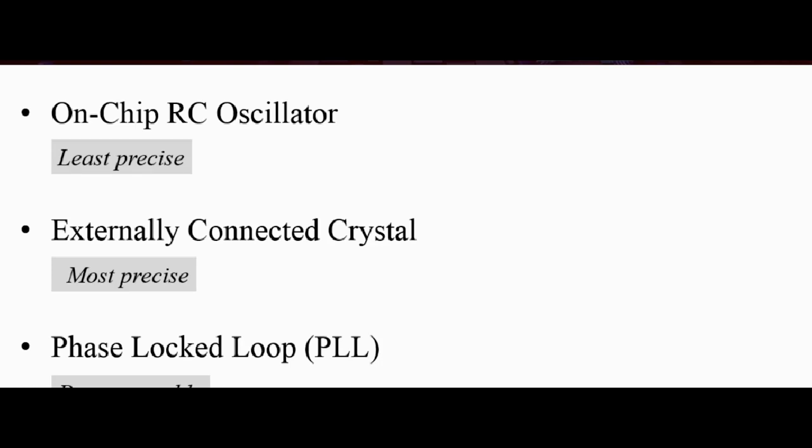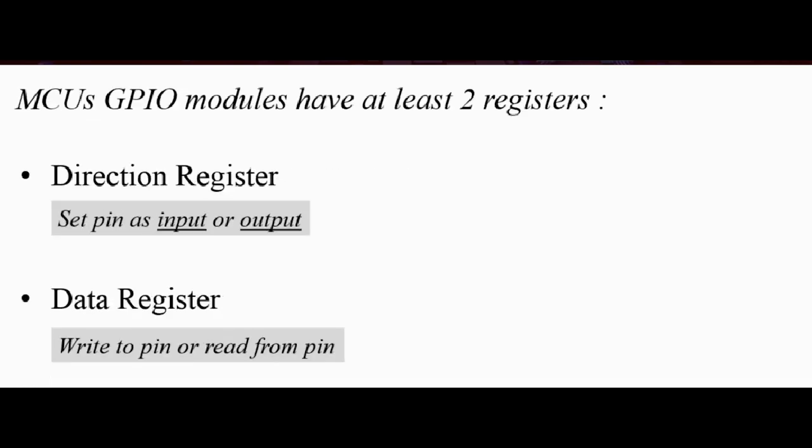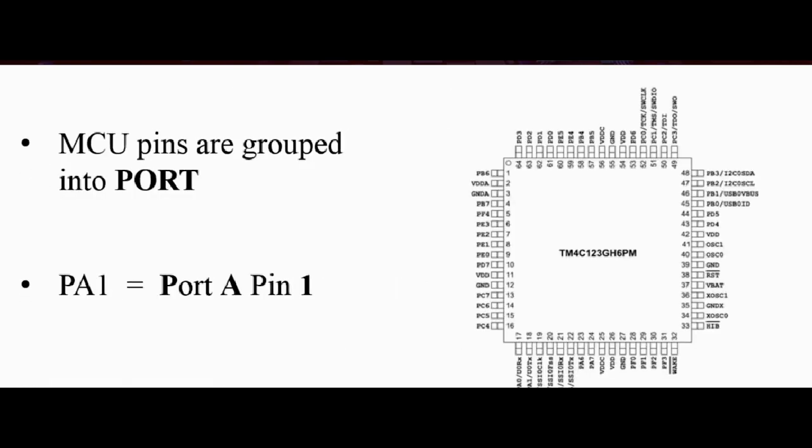Okay, so that's all there is for this very short lesson on GPIO. I'll see you in the next lesson. So the takeaway, just to summarize, GPIO pins, microcontroller pins, are arranged in port. Example, PA1, port A pin 1.